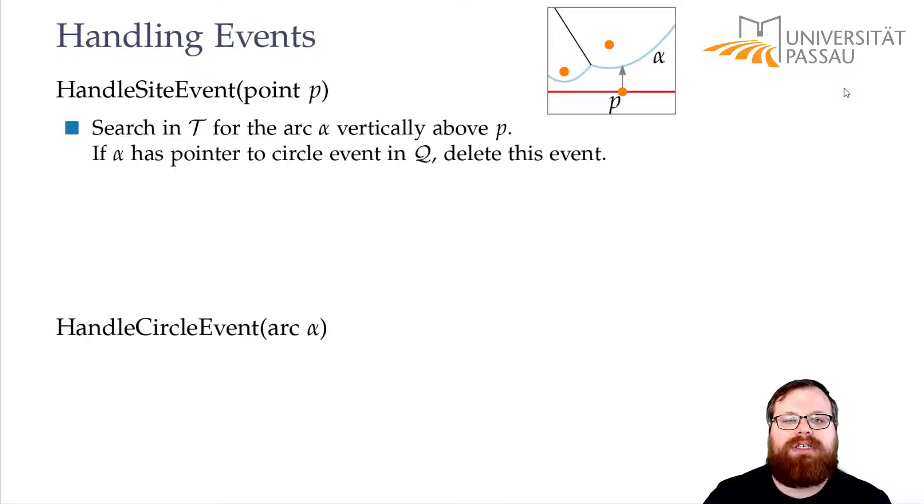Now if this arc has a pointer to any circle event, the circle event that will later tell us here we will have a new Voronoi vertex, then we delete these events. Now since we get a new parabola, we have to split the parabola alpha into two new ones, into the part that lies to the left of this and the part that lies to the right.